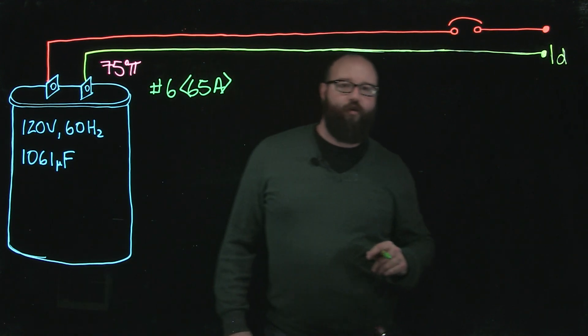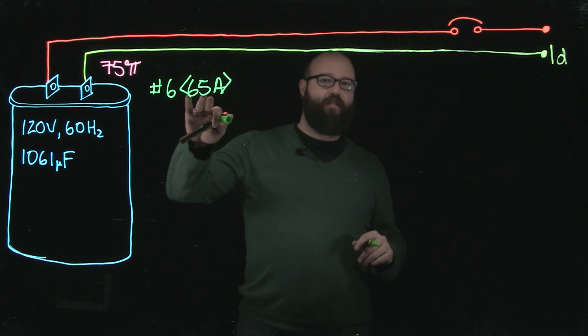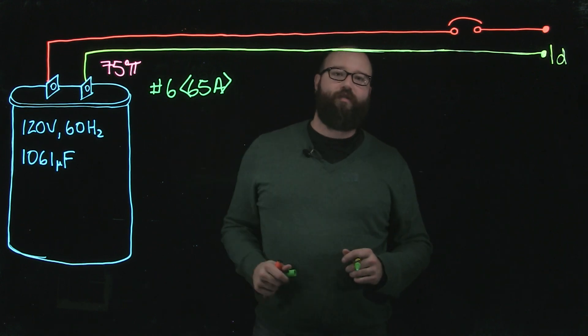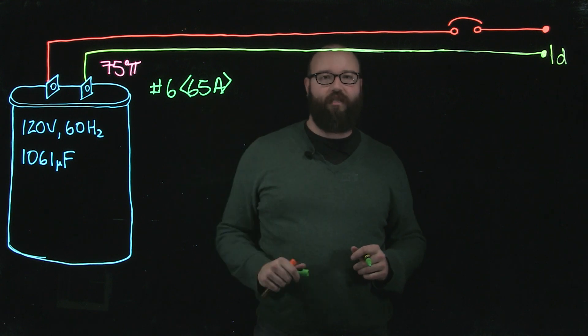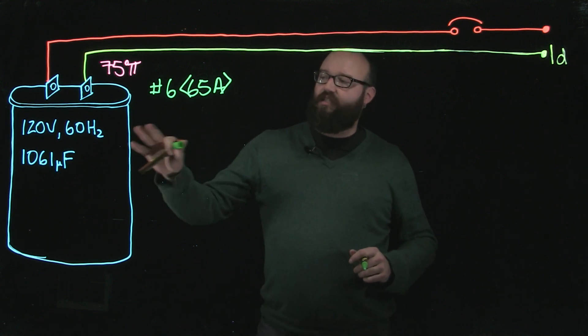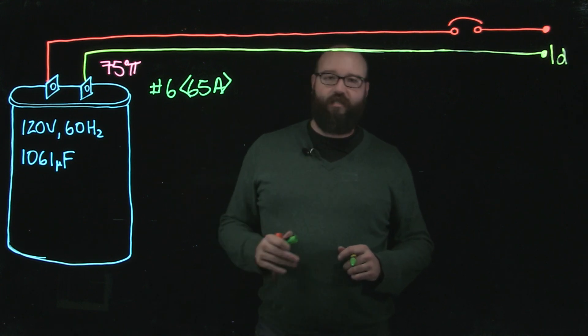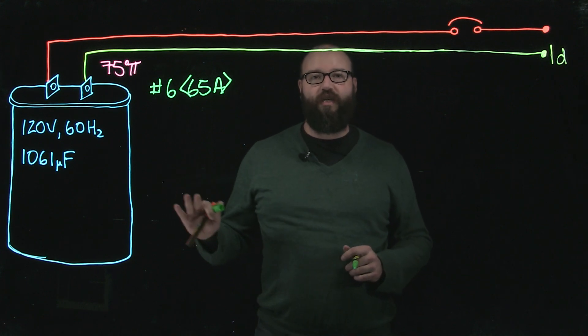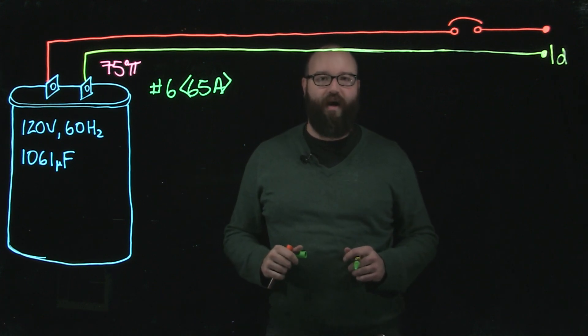Now if this was a general load, we would need to worry about the ampacity of this conductor, because according to section 14, that's how we would size our overcurrent, based off the ampacity of the conductor. However, this is one of those loads that's dealt with somewhere else in the code, we can ignore section 14 as far as sizing overcurrents off of ampacity.